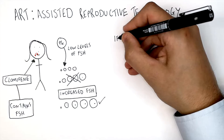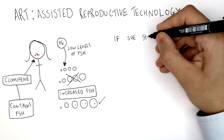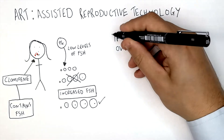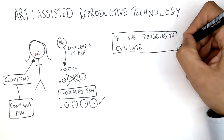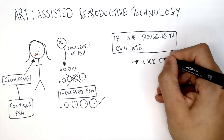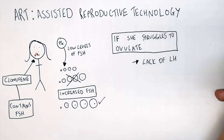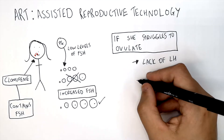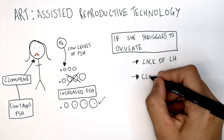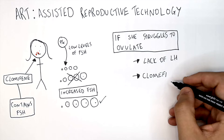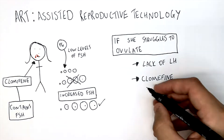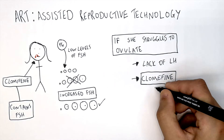If the issue is that the female struggles to ovulate — to release the egg from the ovary — that might be due to low levels of LH. So that means she will be given clomiphene, as clomiphene also contains LH.